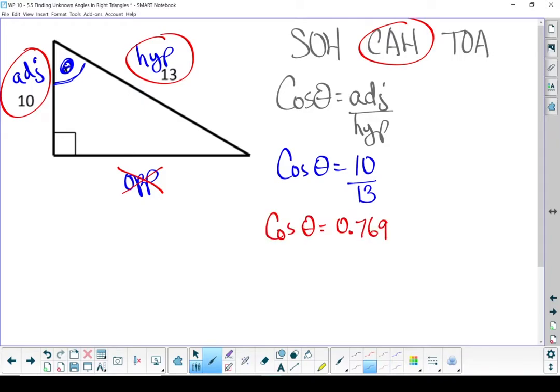That right there is a trig ratio. And usually we want to write down our trig ratios as three decimal places. And since we know our trig ratio, we're going to work backwards to find our angle. So the inverse cosine of 0.769 will give us our angle. And we'll calculate that using second function cosine. And our calculator gives us 39.7 degrees. There's our answer.